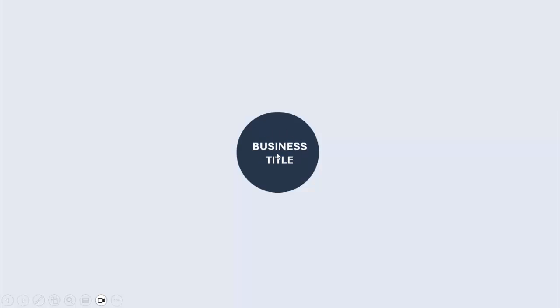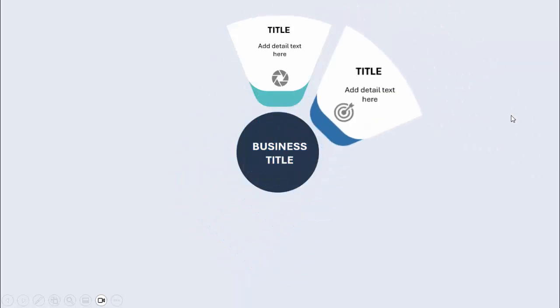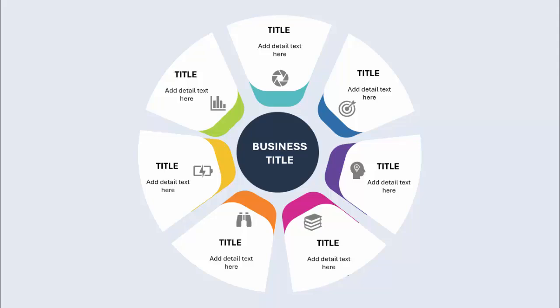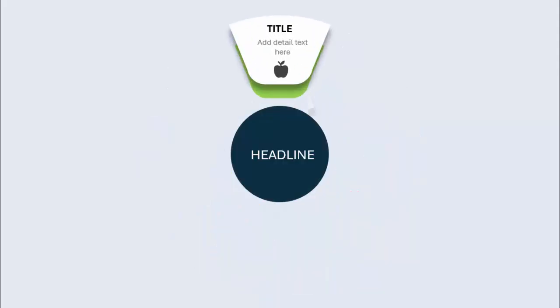In today's tutorial I'm going to show you how to create a seven steps infographic slide in PowerPoint. In the center I've added the oval shape where you can add the business title. When you click it will show the first option where you can add the title, icon, and detailed text. With different color combinations come the second, third, fourth, fifth, sixth, and seventh options.